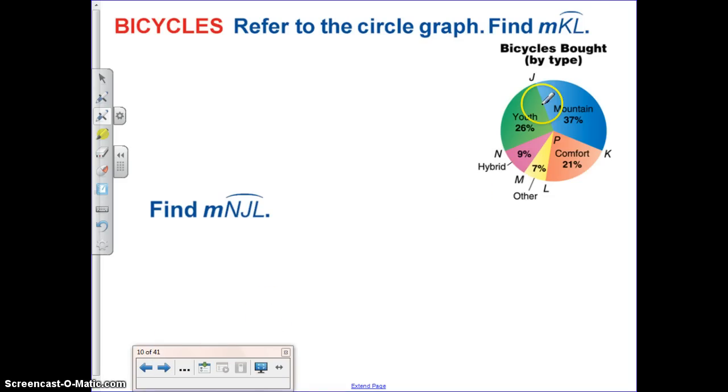Refer to the circle graph to find the measure of arc KL. So, right here. Well, we know that 21 is to 100, as this X is going to be to 360. And then we know that that central angle is the same as that minor arc.